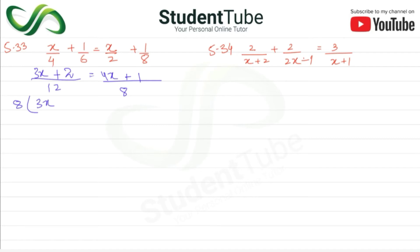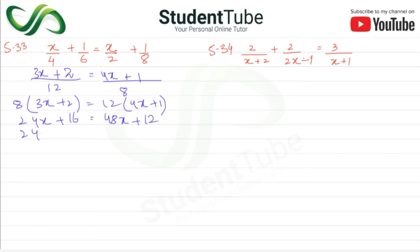Now cross multiplication: 8 multiplied with (3x + 2), and 12 multiplied with (4x + 1). So 8×3x = 24x, and 8×2 = 16, equal to 12×4x = 48x plus 12×1 = 12. So we get 24x + 16 = 48x + 12.